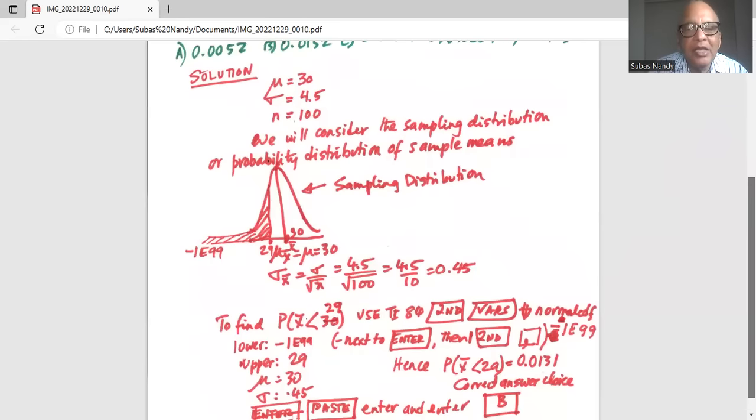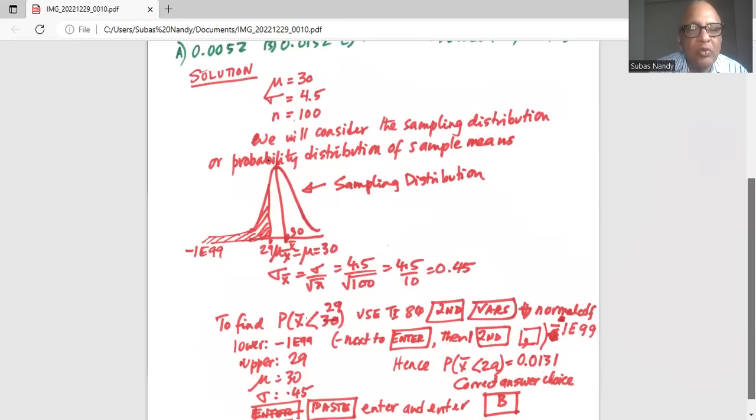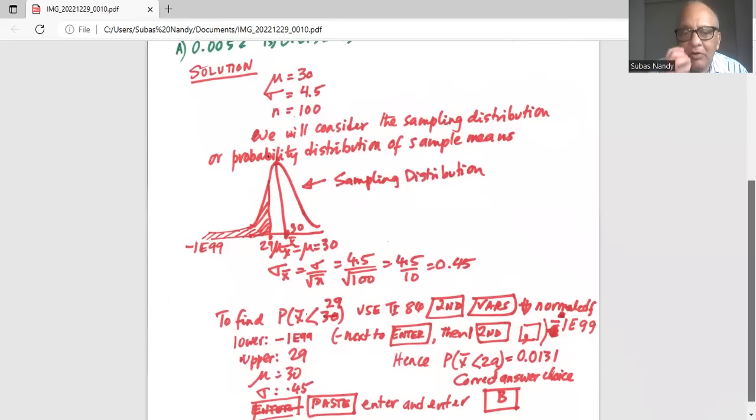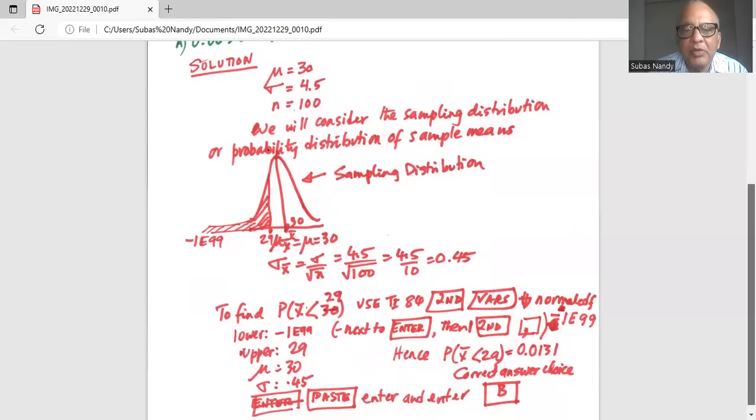So remember we are finding the area to the left of 29 in the sampling distribution curve. So we start from a lower value of very large negative number which is in our calculator minus 1 E 99. How do I do that? Minus, I press the minus next to enter, then I press the second button and then the comma button. This will give me the E and then I type 99. So I'll have minus 1 E 99 as the lower boundary for the area which I want to find out.